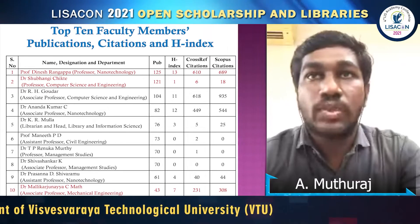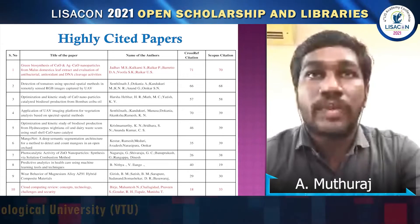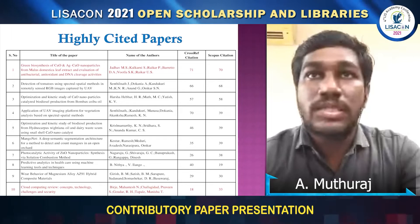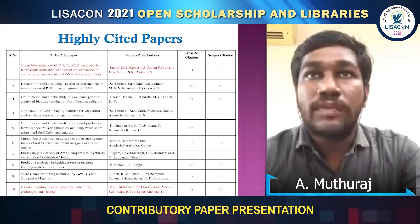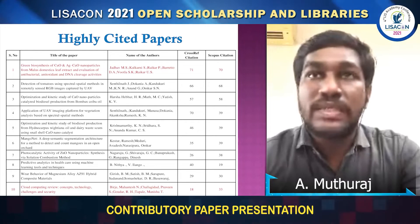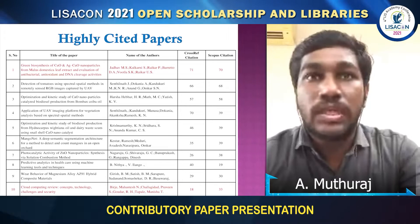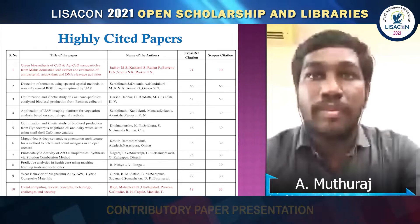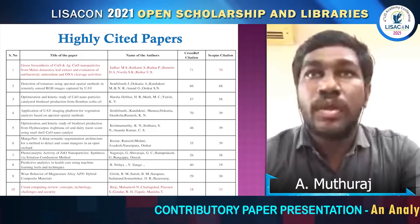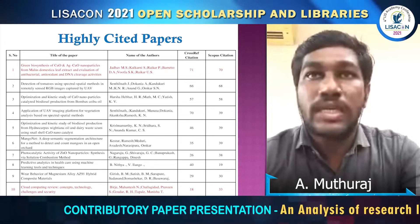Table 6 covers highly cited papers. The first paper has received 71 citations from Google Scholar and 70 citations from Scopus. The tenth paper has received 18 citations from Google Scholar and 33 citations from Scopus.